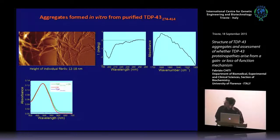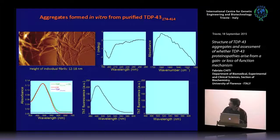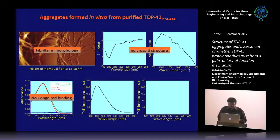With Congo red we couldn't see any binding — the spectrum in the presence or absence of the fragment is virtually identical, indicating no Congo red binding. With thioflavin T we observed some lack of reproducibility: sometimes we could see thioflavin T positivity, other times negativity. This variable thioflavin T positivity probably reflects the variability also observed in vivo. In summary: fibrillar morphology, no cross-beta structure, no Congo red binding, and variable thioflavin T binding.